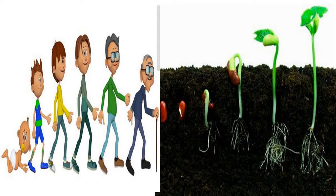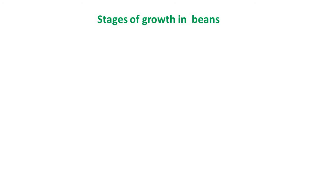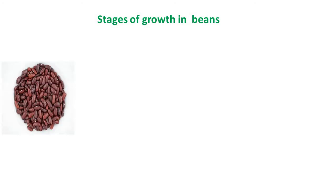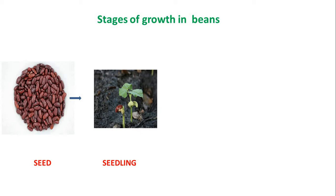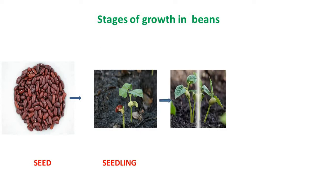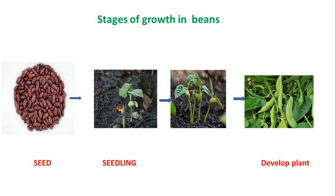Just as a small baby slowly and gradually grows into an old person, similarly a plant starts from a small seed, slowly grows into a seedling, and then develops into a fully grown plant. The life cycle of plants begins with a seed. If we provide it proper water and sunlight, the seed develops into a seedling, which then slowly grows into a developed plant.